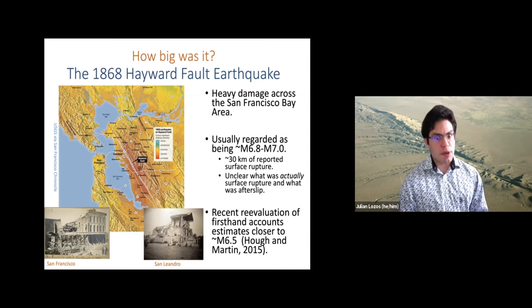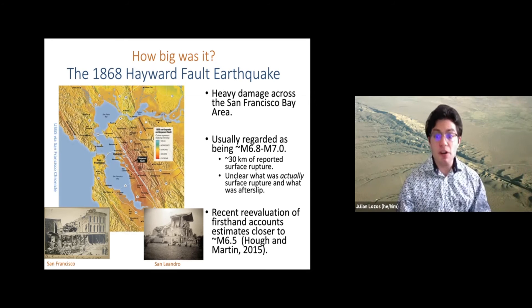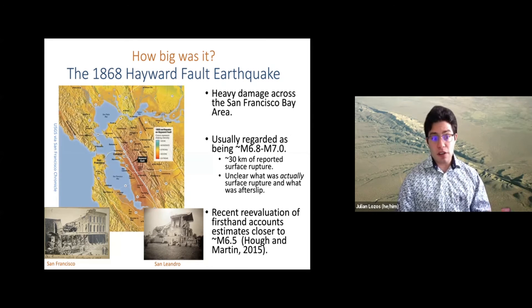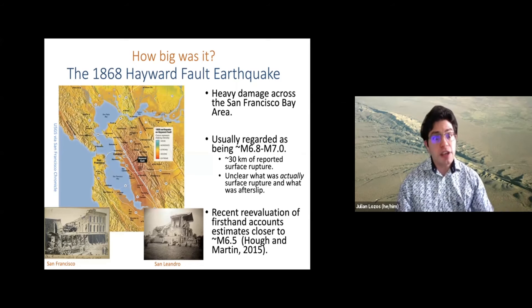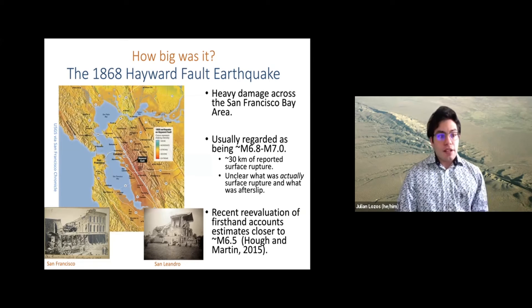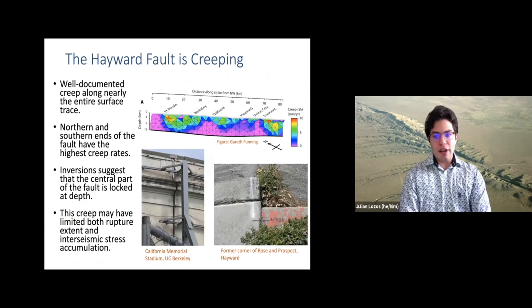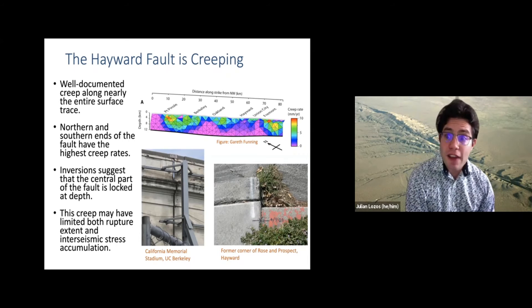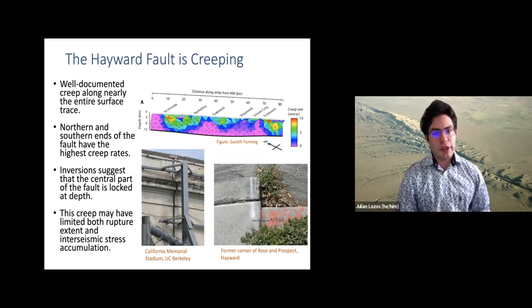Because the Hayward is a partially creeping fault, it's kind of unclear how much of that surface rupture was true surface rupture versus rapid afterslip. More recently, Huff and Martin have done a reevaluation of the firsthand accounts suggesting this probably only needed to be a 6.5 to do what it did. My work on this one actually started less as a project about 1868 and more as a project on investigating the effect of aseismic creep on rupture propagation.